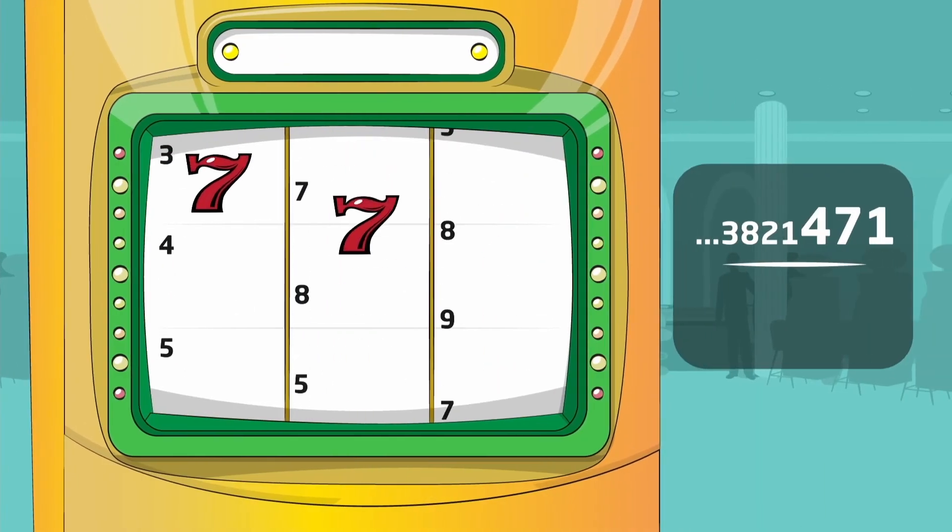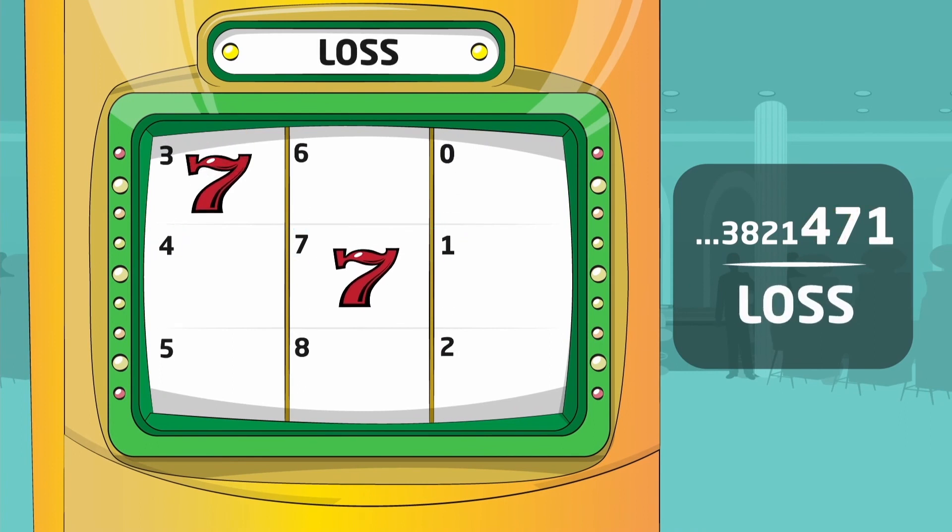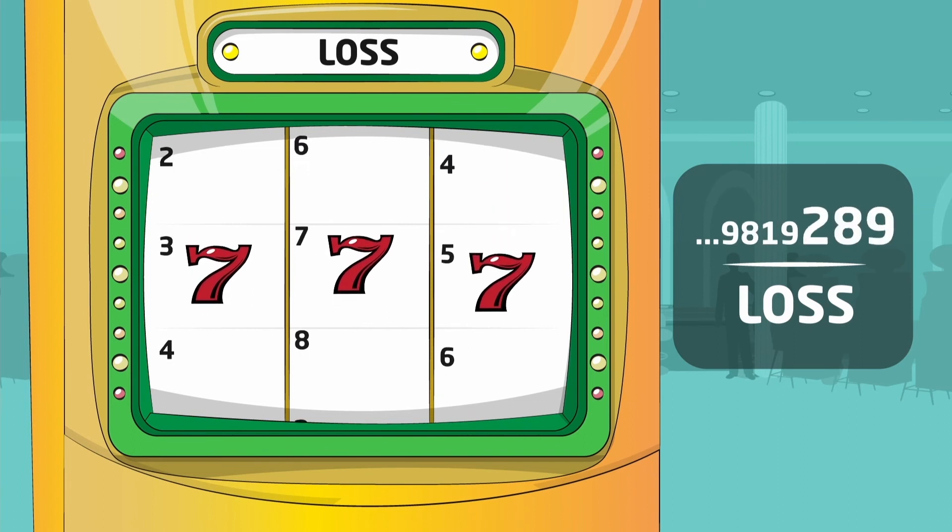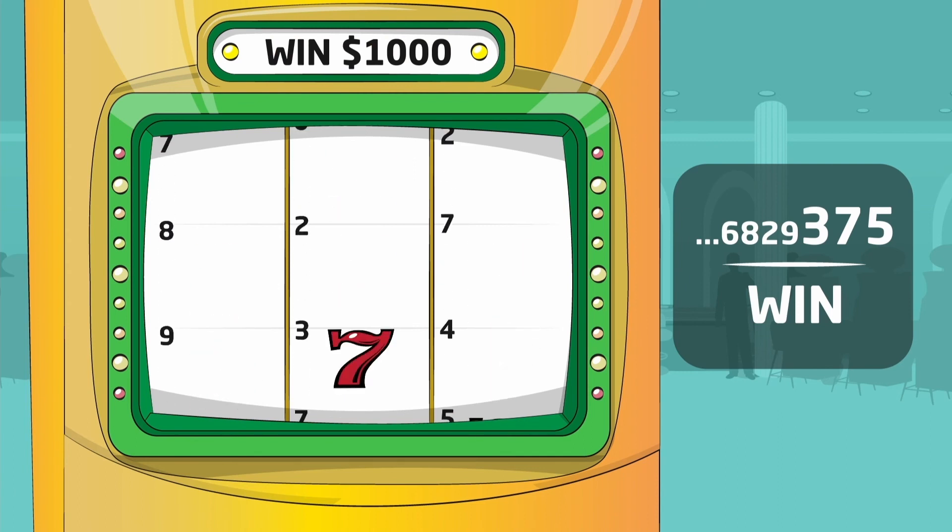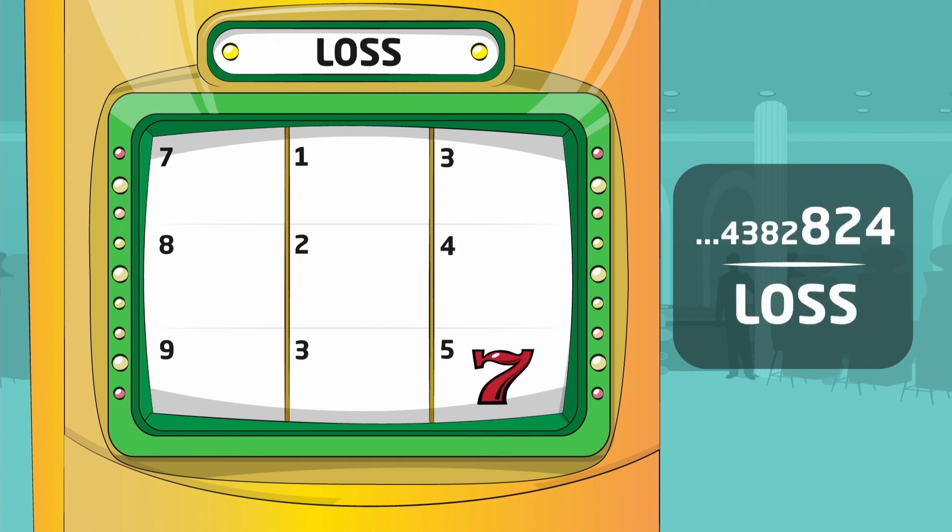As you can see, random numbers ending in 471 do not result in a win. In fact, only random numbers ending in 375 lead to a win, because of the specifics of this made-up slot machine. Because of how the game mathematics work, whenever the RNG returns a number ending in these specific digits, the player wins $1,000. Any other number results in a loss.